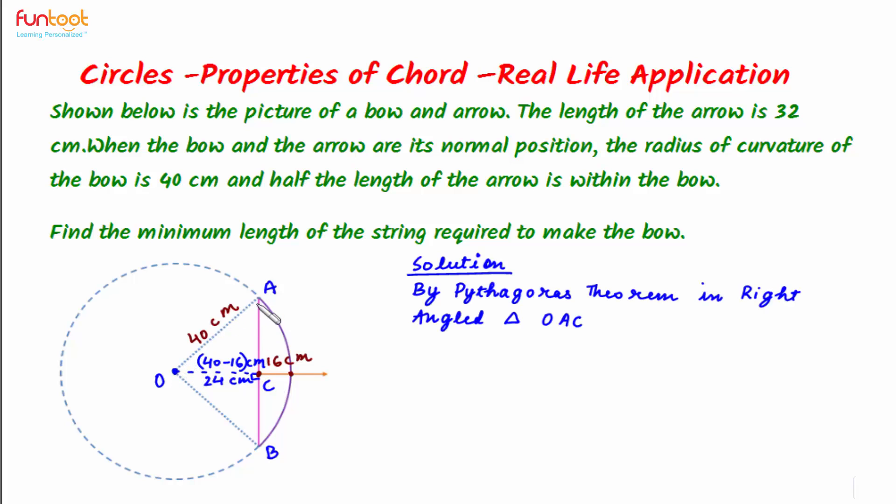Here OA squared will be equal to AC squared plus CO squared. This would be equal to AC squared plus OC squared will be 24 squared. So from here we'll find the value of AC. For simple calculations, we can find AC to be 32 centimeters.